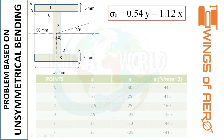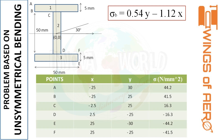We set up a coordinate table for the points. Moving left from the centroid is negative x, right is positive x; upward is positive y, downward is negative y. For point A: the distance from the centroid to the left edge is minus 25 (since total width is 50 mm and centroid is at 25). The total height from bottom to top is 60 mm, and from the centroid at 30 mm, the remaining upward distance is 30 mm, so y equals positive 30.